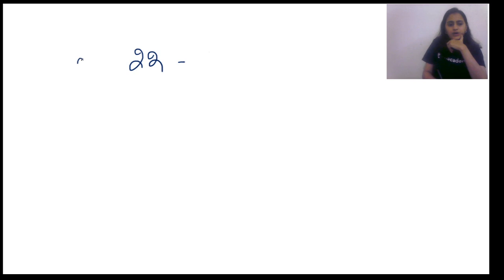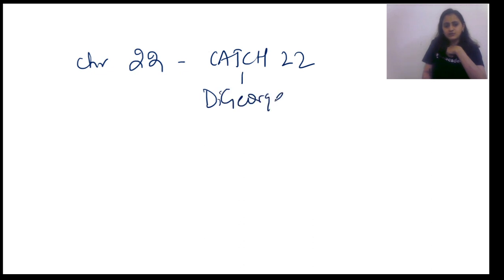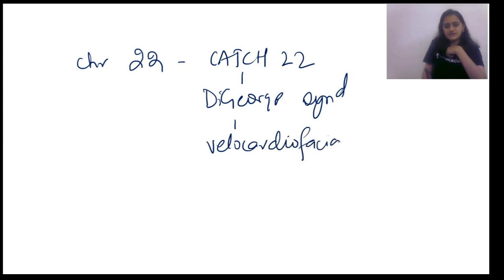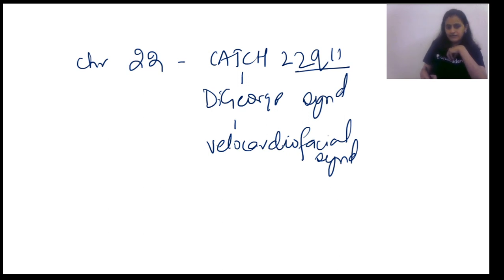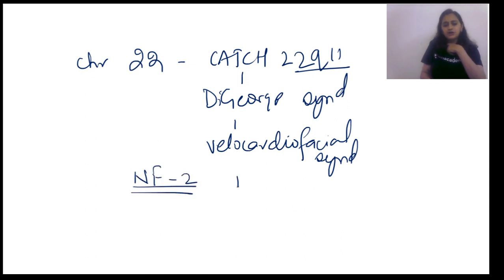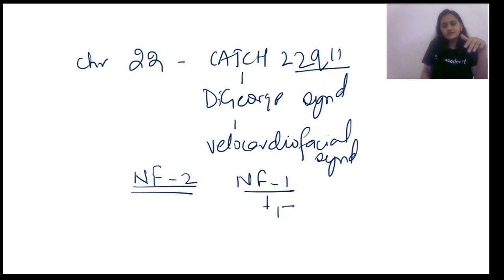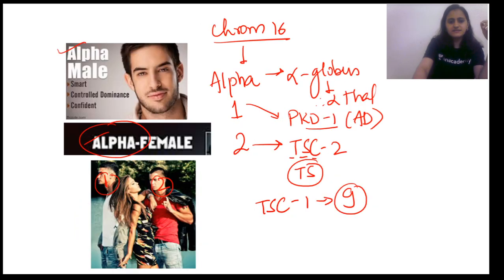Chromosome 22 is Catch 22 — DiGeorge syndrome or velocardiofacial syndrome, with deletion at 22q11. Chromosome 22 is also NF2, while NF1 is at chromosome 17. Let's quickly revise from chromosome 15 to 22.